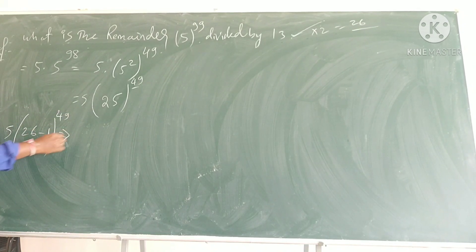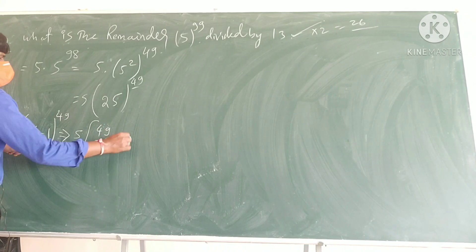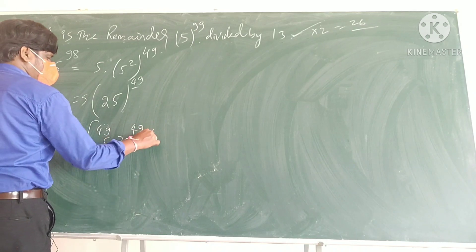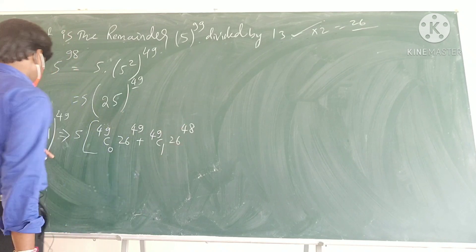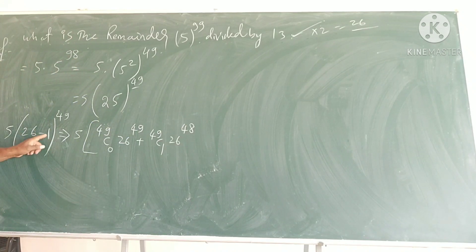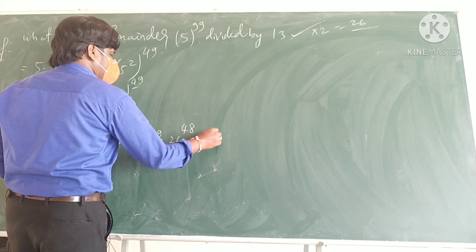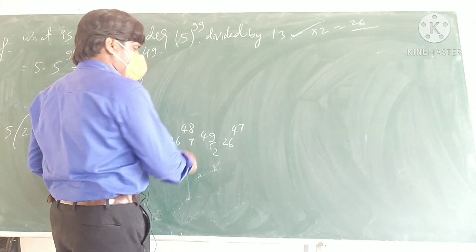This is equal to, I can write 5 into, expanding this. So if you expand what do you get here? 49 C 0, 26 to the power of 49, correct, plus 49 C 1, 26 to the power of 48, minus I will get, this is minus 1. So I will get here minus 1, plus 49 C 2, 26 to the power of 47.